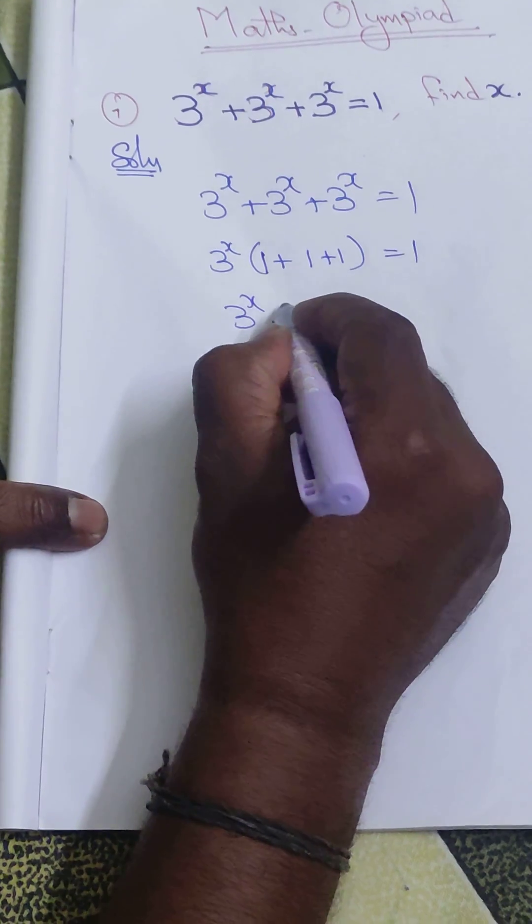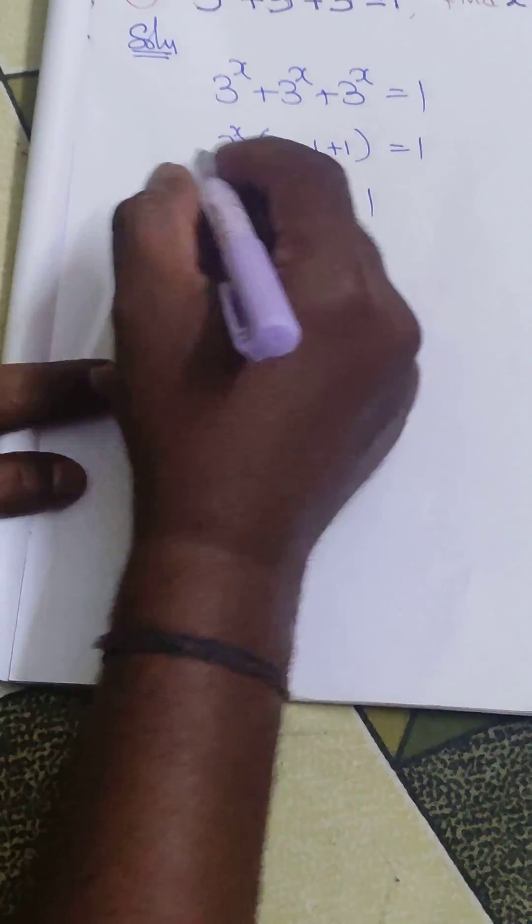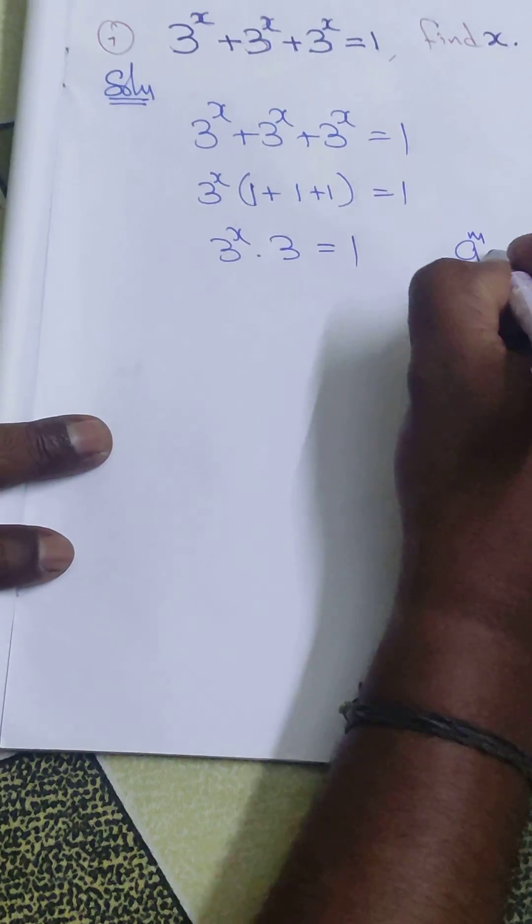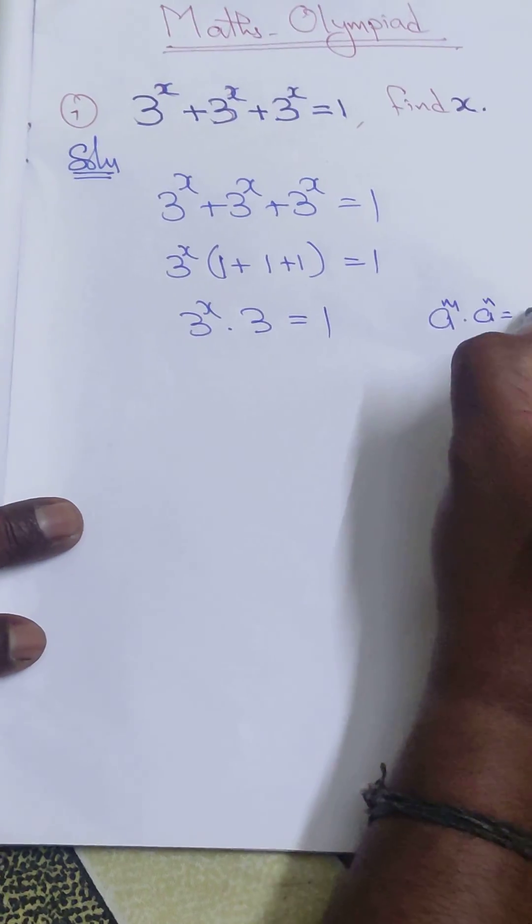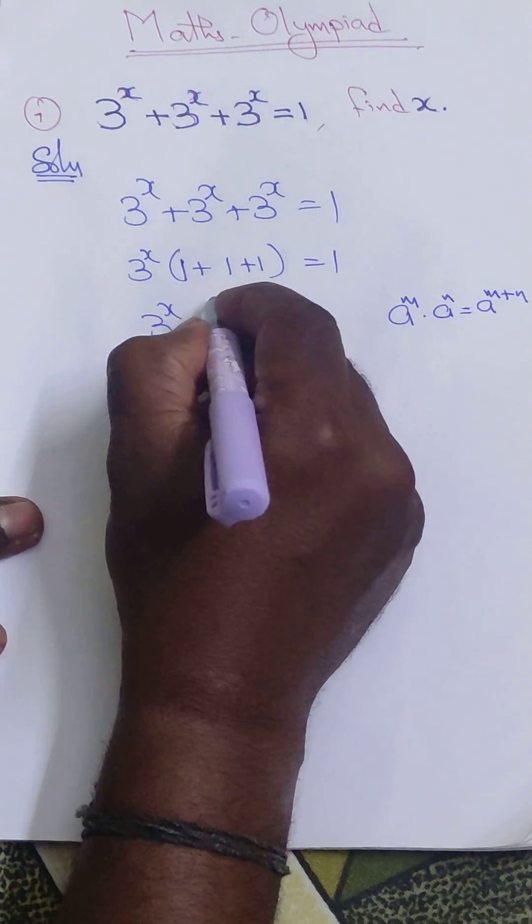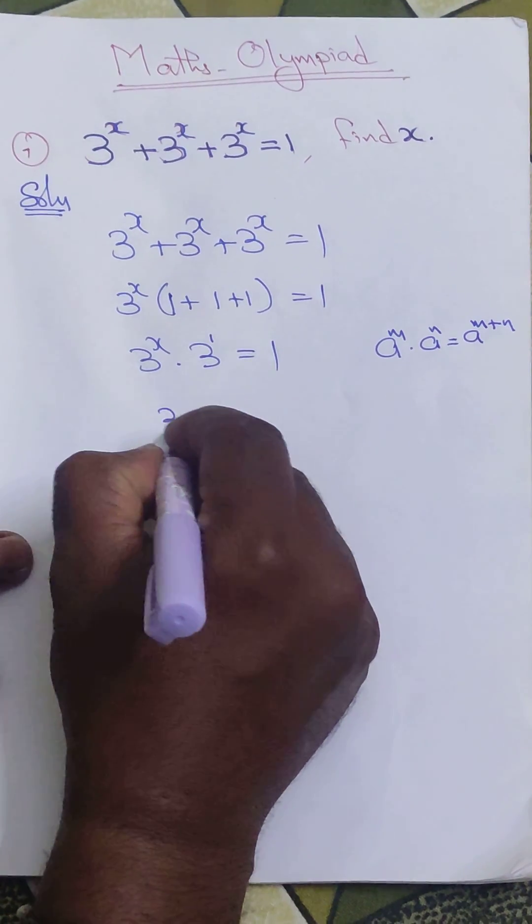We know the formula: a^m × a^n = a^(m+n). Therefore, we can write here, power is 1, therefore 3^(x+1) = 1.